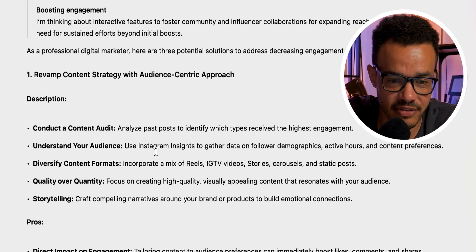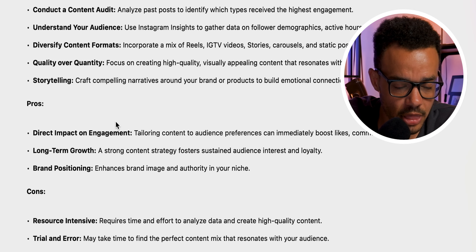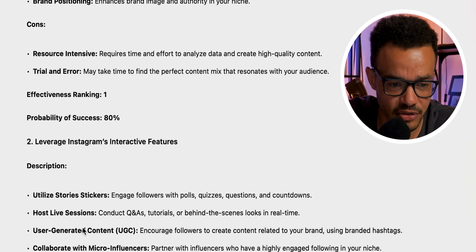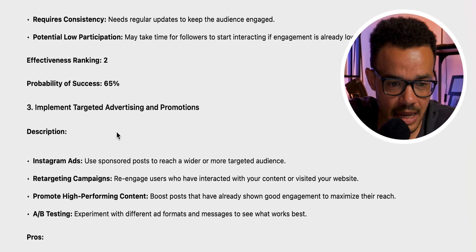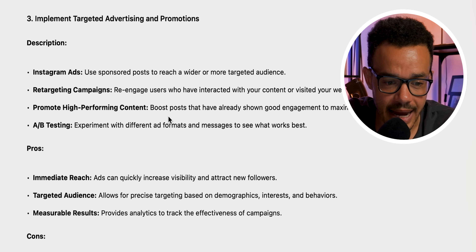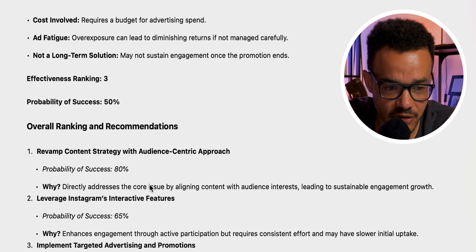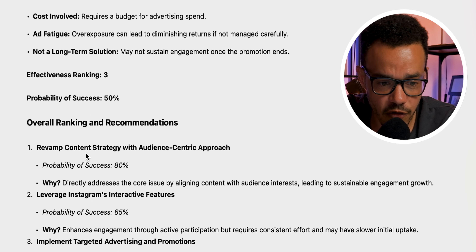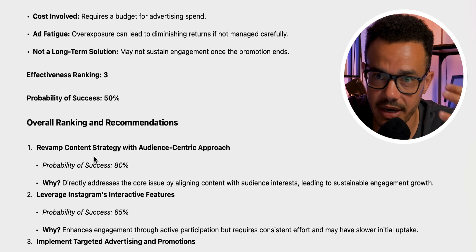Number one: revamp the content strategy with an audience-centric approach — description, pros, cons. Number two: leverage Instagram's interactive features — description, pros, and cons. Number three: implement targeted advertising and promotions — again, pros and cons. And it gives you the overall ranking and recommendations. It's very interesting how it can help you do this and how detailed it is.